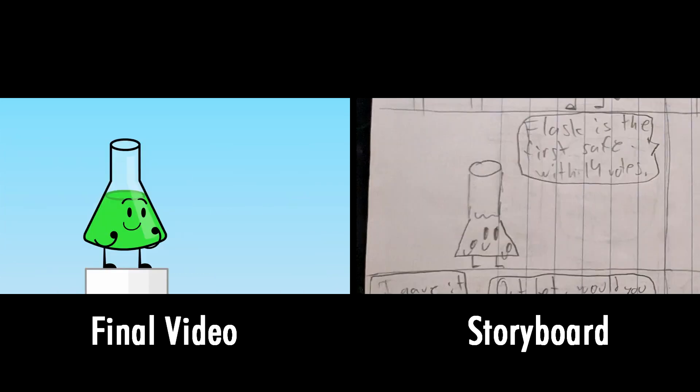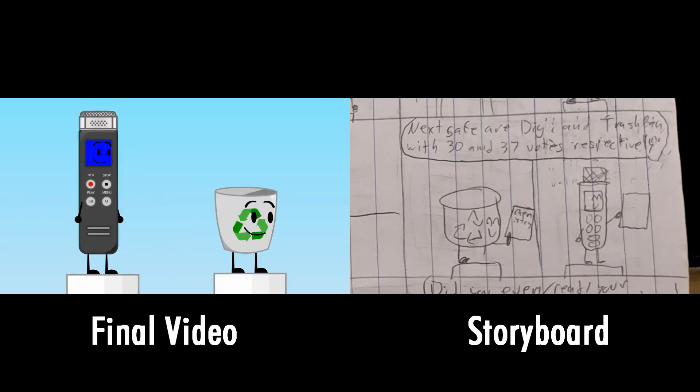Flask is the first safe with 14 votes. Next safe are Digi and Trashpin, with 30 and 37 votes respectively.